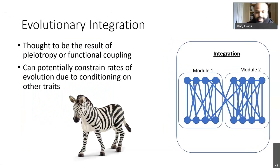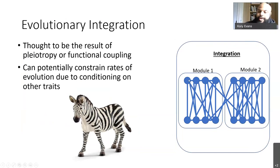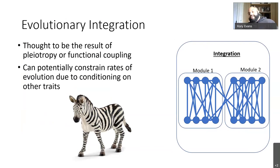At macroevolutionary timescales, integration and modularity can have very interesting consequences. Integration is typically thought to constrain rates of morphological evolution due to conditioning on other traits — as networks become more integrated and encompass more traits, it becomes more challenging to find individual mutations that are beneficial across all of them. This creates evolutionary inertia. I liken this to the Erykah Badu 'Bag Lady' scenario — she's trying to catch the bus but has too many bags, so she's too slow. To speed up, she has to let go of some bags.